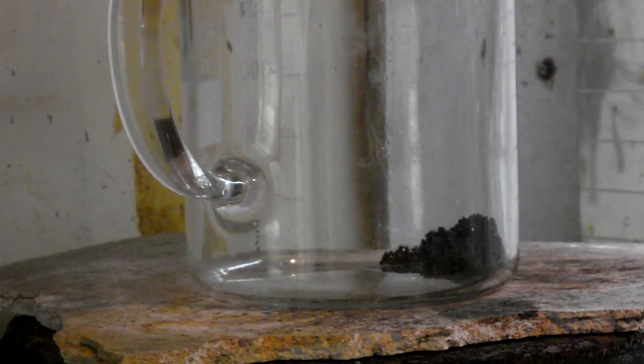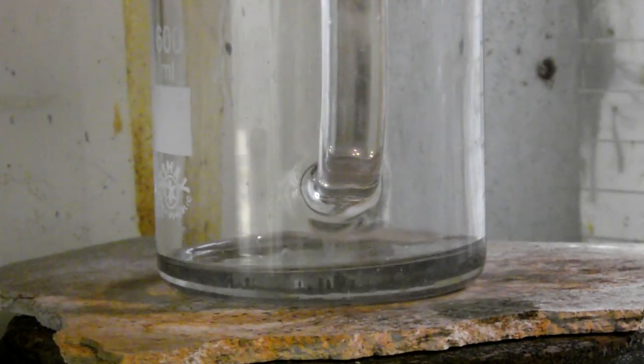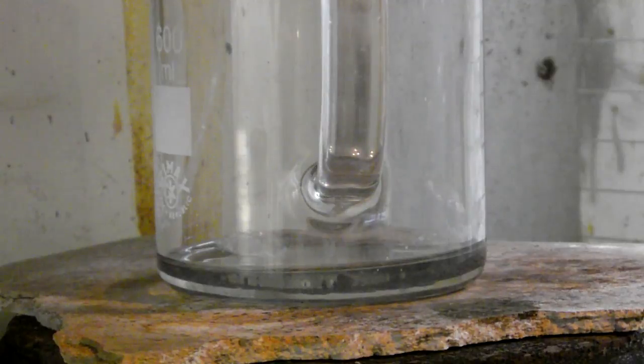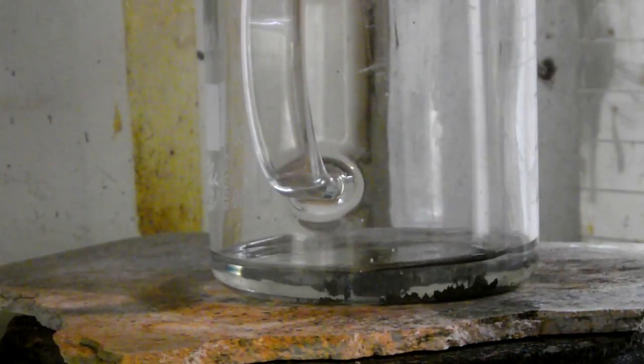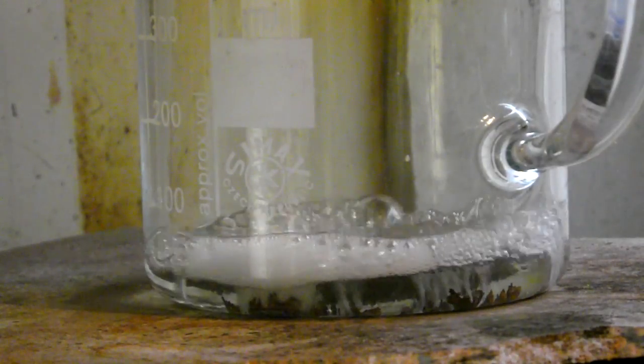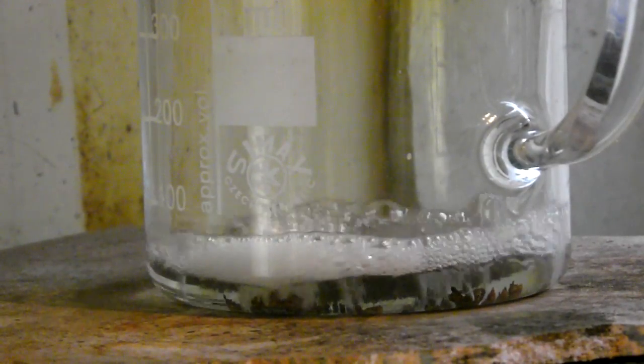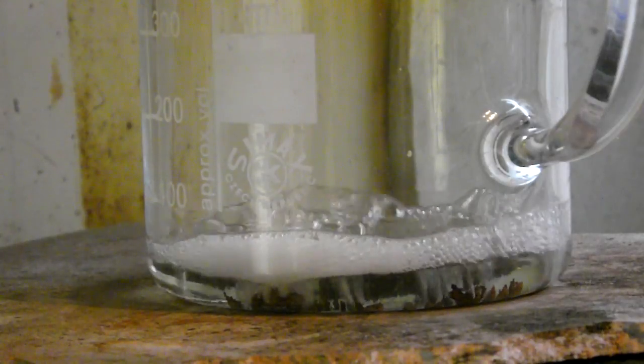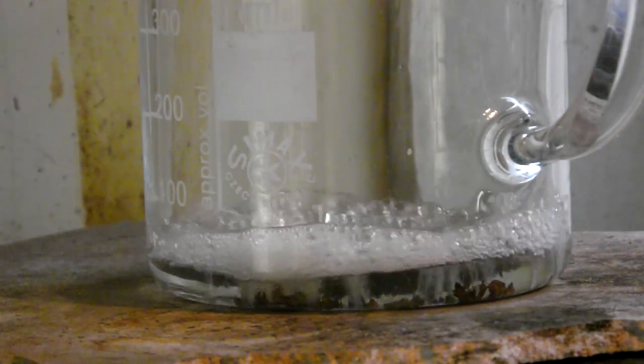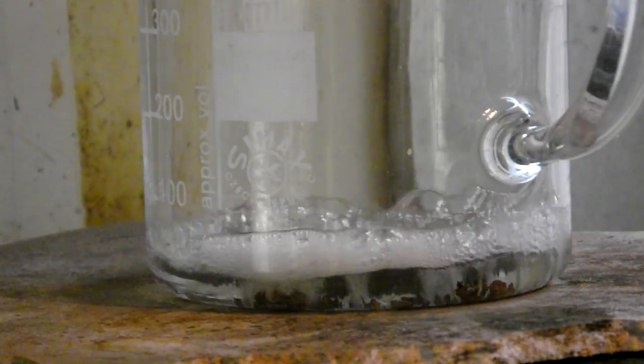The black residue in the beaker is covered with concentrated nitric acid and set to boil for a couple of minutes. Gold clumps together and changes color from black to tan.